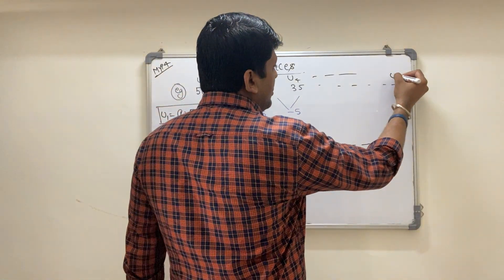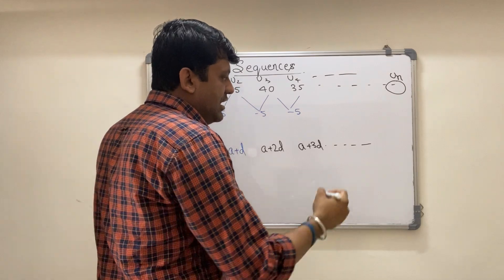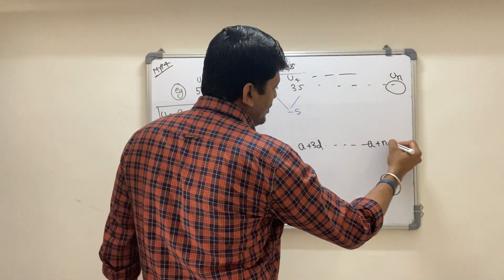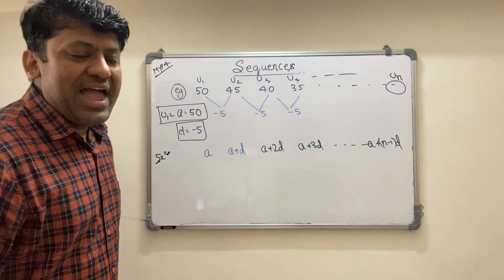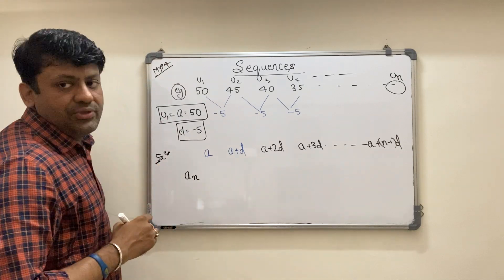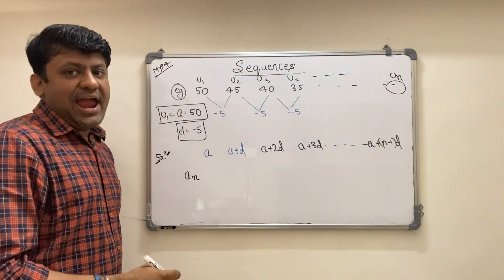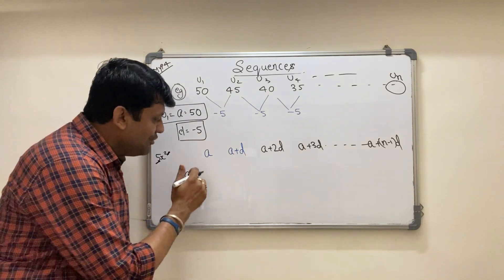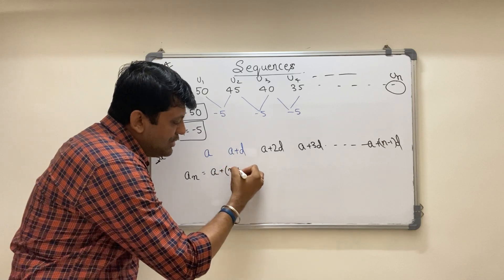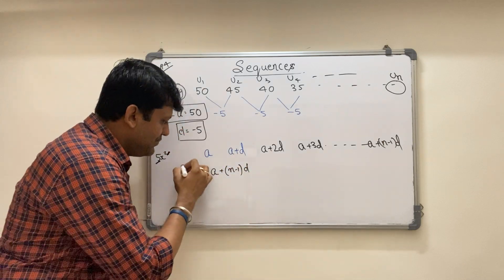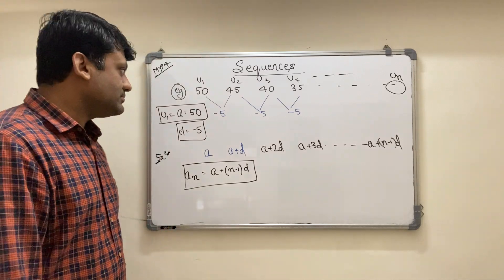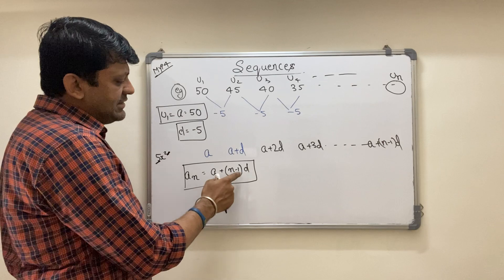So in the nth term, the coefficient of d is n minus 1. That gives us the formula: A(n) = a + (n − 1)·d. This is a very important formula for linear sequences. At position n, the value will be the first term plus (n minus 1) times the common difference.